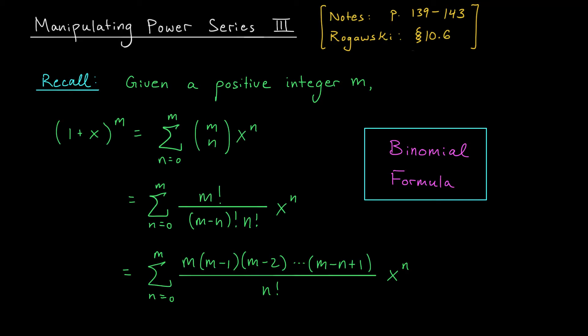Well, it's given by this quotient of factorials: m factorial divided by m minus n factorial times n factorial. Notice that these coefficients can be simplified by cancelling some terms in the numerator and denominator. Specifically, this m factorial term includes the factors 1, 2, 3, all the way up to m minus n — that is, it's divisible by m minus n factorial. If you cancel that term from the numerator, you're left with m, m minus 1, m minus 2, all the way down to m minus n plus 1, divided by n factorial times x to the n.